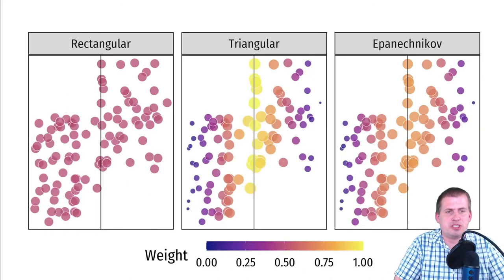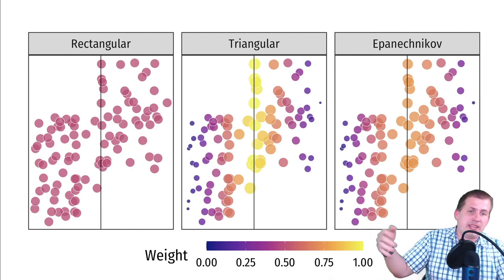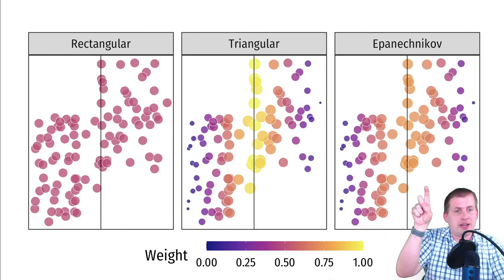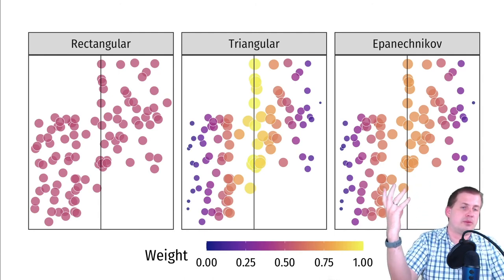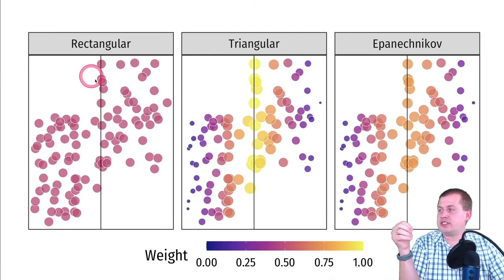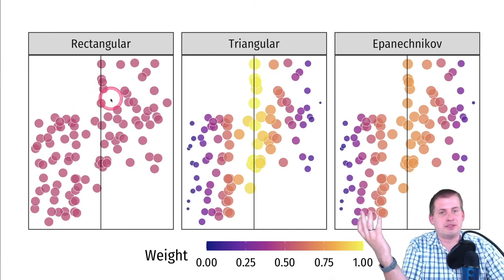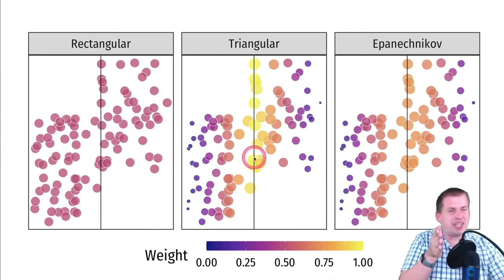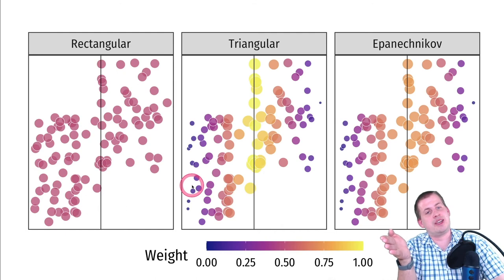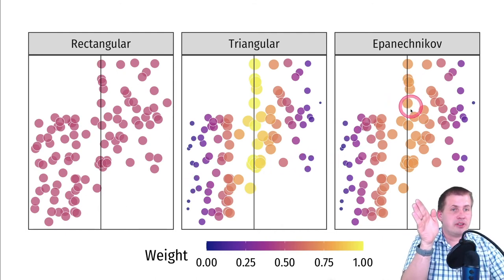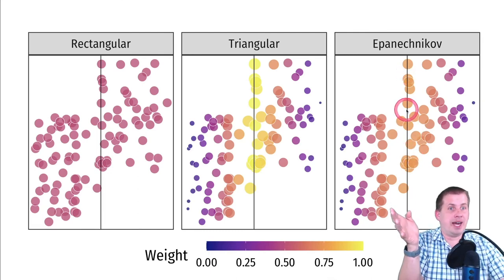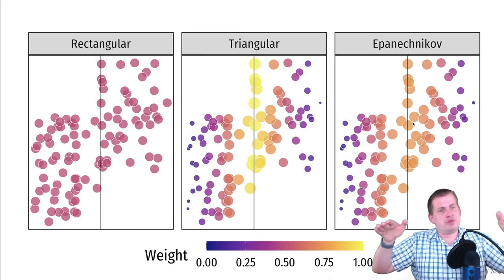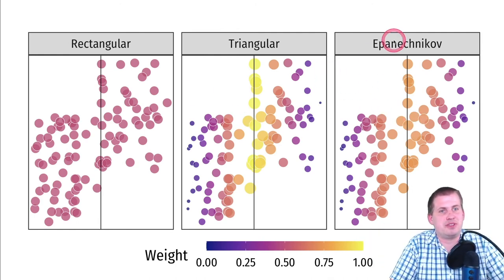A plot illustrates the difference: with rectangular (uniform) weighting, all dots in the bandwidth have the same color intensity — same weight. With triangular weighting, dots right at the cutoff are bright yellow (highest importance) and fade as you move away. With the Epanechnikov kernel, dots near the cutoff are in the orange range — high importance, but not as extreme as triangular — and then taper off more slowly toward the edges.